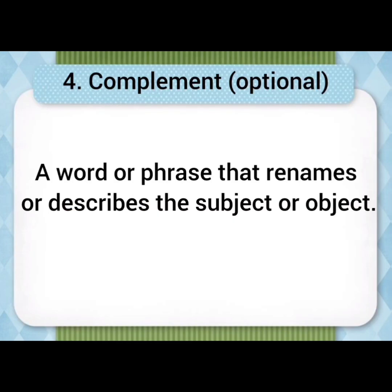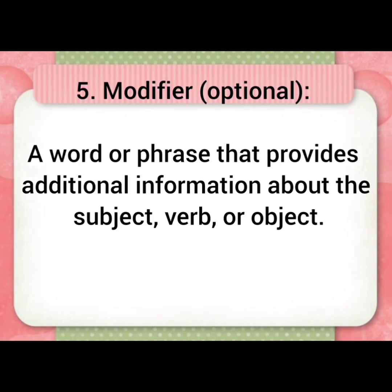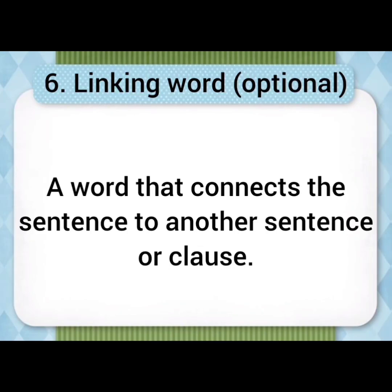Complement is optional — a word or phrase that renames or describes the subject or object. Modifier is also optional — a word or phrase that provides additional information about the subject, verb or object. And finally, linking word, which is also optional — a word that connects the sentence to another sentence or a clause.